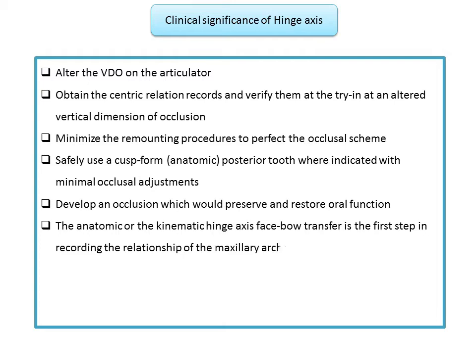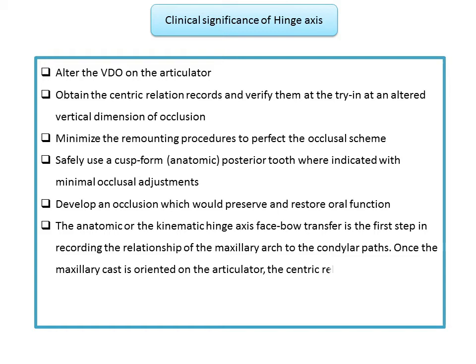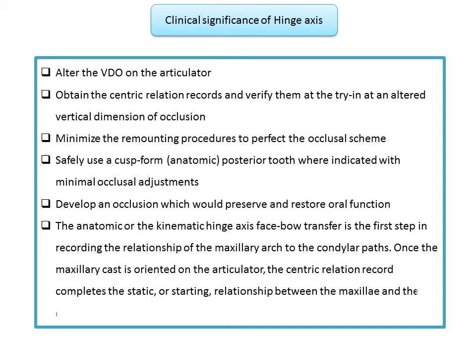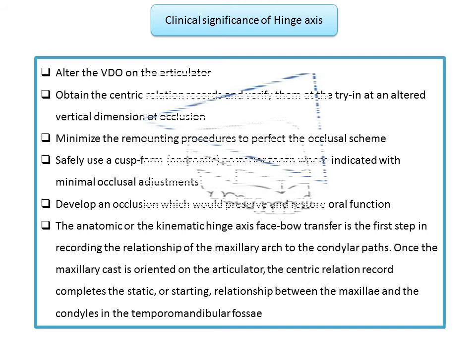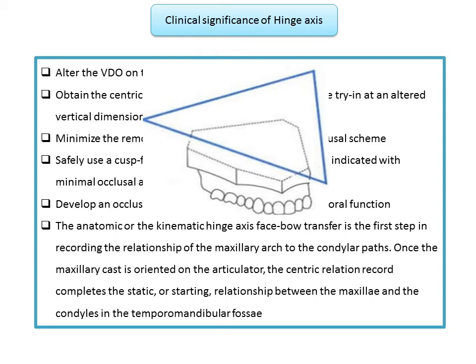The anatomic or kinematic hinge axis face bow transfer is the first step in recording the relationship of the maxillary arch to the condylar path. Once the cast is oriented on the articulator, the centric relation record completes the static or starting relationship between the maxillae and the condyles in the temporomandibular fossae. Basically, hinge axis recording is used to orient the maxillae in the articulator — we record the hinge axis, orient the maxillary cast accordingly, and then determine the maxillomandibular relationships.